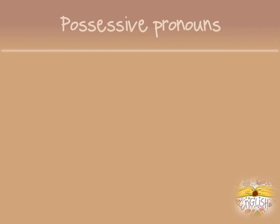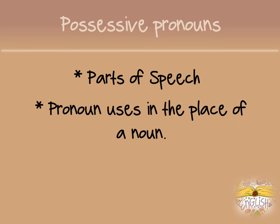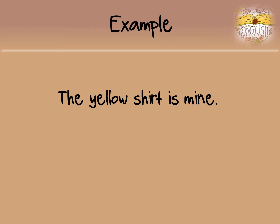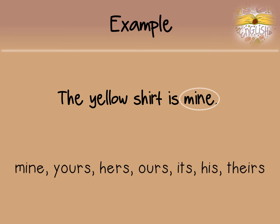Possessive pronouns are also parts of speech. A pronoun is used in the place of a noun, and the word 'possessive' means to show belonging. For example, 'The yellow shirt is mine' — the word 'mine' tells you that it belongs to me. Other examples are words like yours, hers, ours, its, his, and theirs.